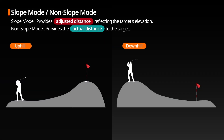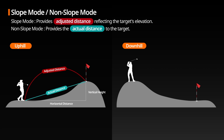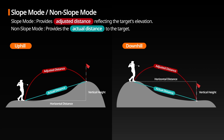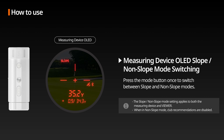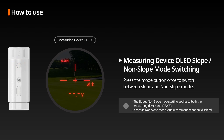Slope Mode / Non-Slope Mode: Switching between slope mode and non-slope mode is possible. Slope mode provides the adjusted distance reflecting the target's elevation, while non-slope mode provides the actual distance to the target. To switch on the measuring device OLED, press the mode button briefly once, and the display will switch between slope and non-slope mode, as indicated in the upper left corner.